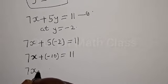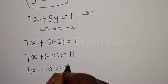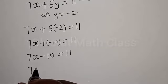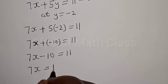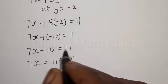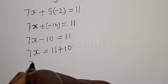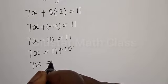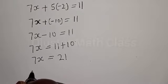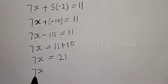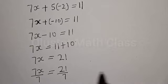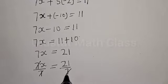So we have 7x minus 10 is equal to 11. Moving minus 10 across the equals sign it becomes plus, so 7x is equal to 11 plus 10, that is 21. Now let's divide both sides by 7: 7x divided by 7 is equal to 21 divided by 7.